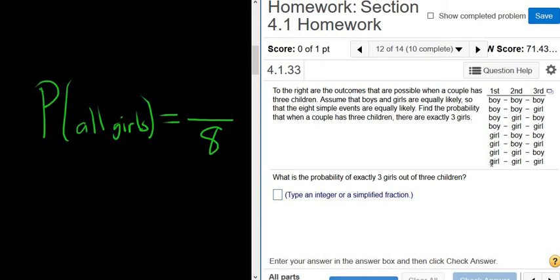And we want them all to be girls. Well, there's only one way for them all to be girls—girl, girl, girl. So the probability of getting all girls is the number of ways to get all girls, one way, divided by the total number of possibilities. So just 1 over 8. The answer should be 1 over 8.